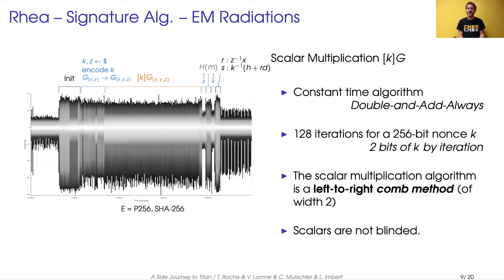The NXP implementation is a constant-time algorithm. It is a double-and-add-always. It has exactly 128 iterations for 256-bit nonces. So two bits of the nonce are processed at each iteration. The scalar multiplication algorithm is, in fact, a left-to-right comb method of width 2, and scalars are not blinded.